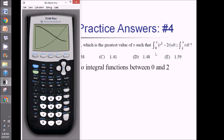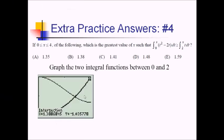We want to know the greatest value where the first function — the solid/thick line — is bigger than the other. That happens at the intersection point; after it, we become less than the second function. Using second trace to find the intersection and pressing enter three times, we get approximately 1.3887. So the first integral is greater until x equals 1.3887, making the answer choice B.